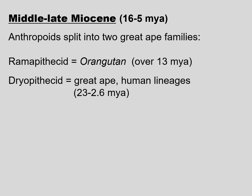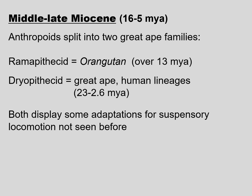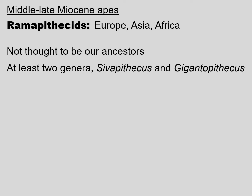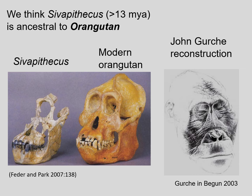During the Middle to Late Miocene, between 16 to 5 million years ago, anthropoids split into two great ape families: the Sivapithecids, leading to the orangutan of today, and the Dryopithecids, which led to the great apes and humans of today. Both display some adaptations for suspensory locomotion not seen before, which is important for modern-day apes. The Sivapithecids have been found in Europe, Asia, and Africa, and are not thought to be our ancestors. We know of at least two genera — Sivapithecus and Gigantopithecus — and we think Sivapithecus in particular is ancestral to the orangutan, dating to 13 million years old or older.